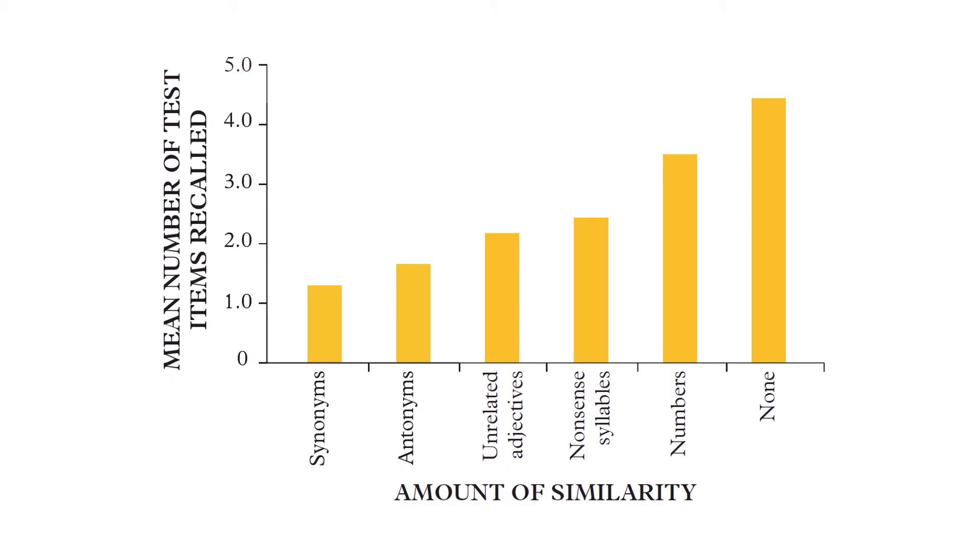Oh by the way, since the later words were affecting the first, would this be an example of proactive or retroactive interference? Well because this is the newer stuff going back to affect the old, it would be retroactive interference.